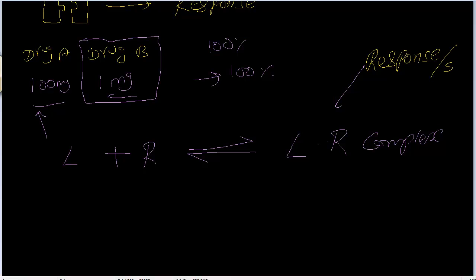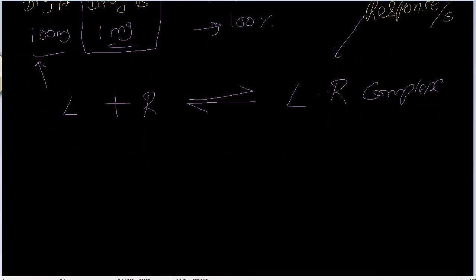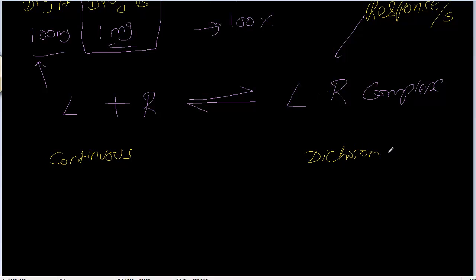This drug-receptor complex will elicit a response or responses. There are different types of responses: there is a quantal response and there is a continuous response, also called a dichotomous response.